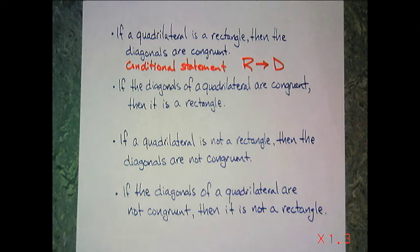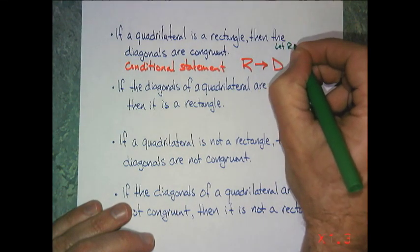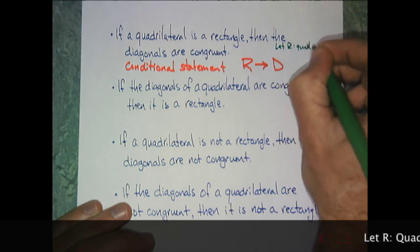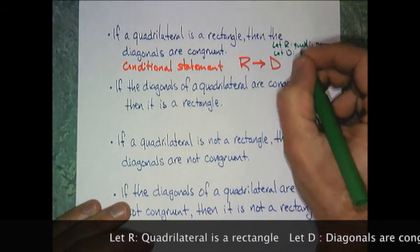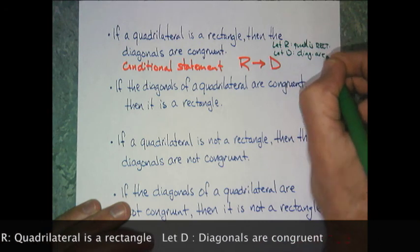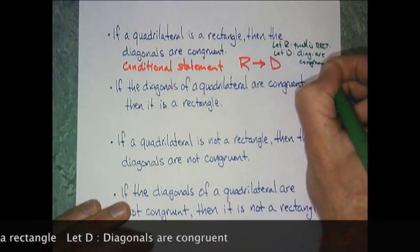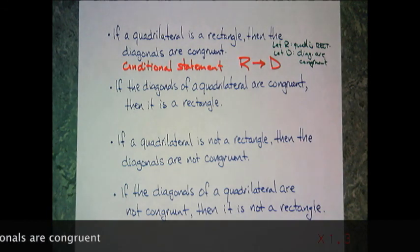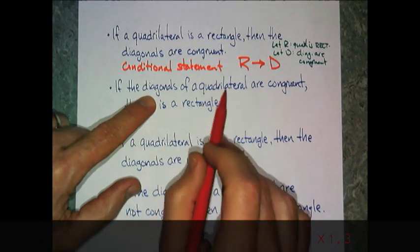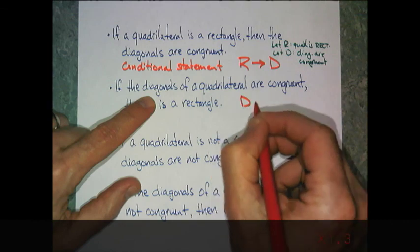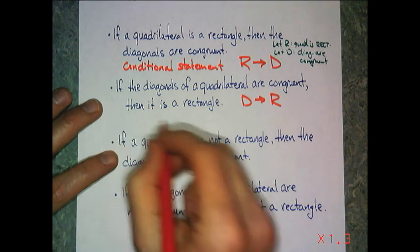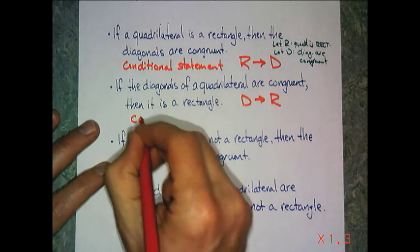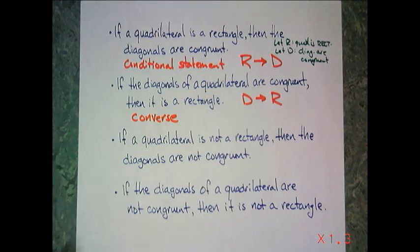So I'm saying I should write my key out. We'll let R be quadrilateral is a rectangle. Let D, the diagonals are congruent. That's a key for that. The next statement takes the diagonals of a quadrilateral are congruent. So that's D, then it's a rectangle, R. So it reversed the statement. That, you may recognize, is called a converse.